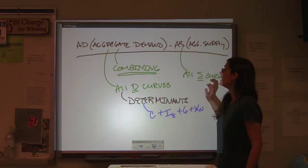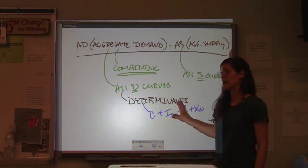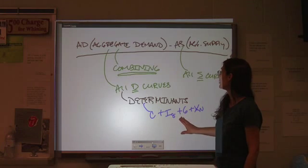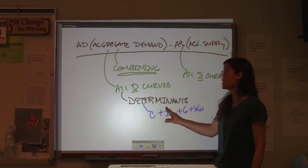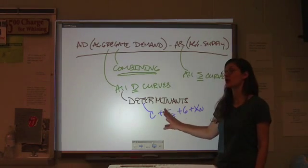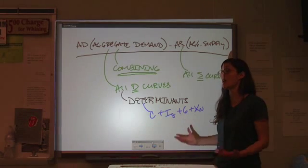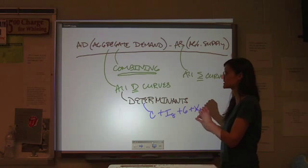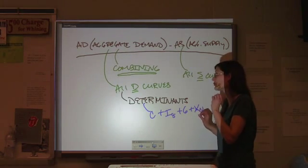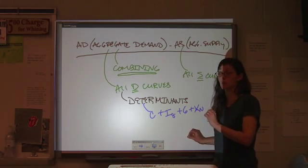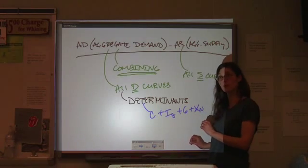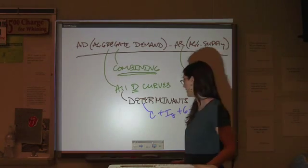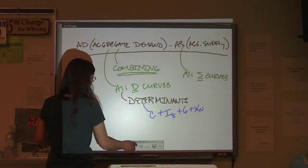Now, the tricky part is knowing which factors you want to try to change at which times, based on overall how the economy is doing. And this is where you really have to know the graphs, inside, outside, backwards, upside down, and every other which way you can think of.